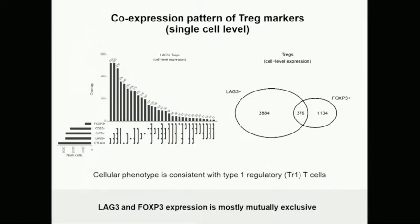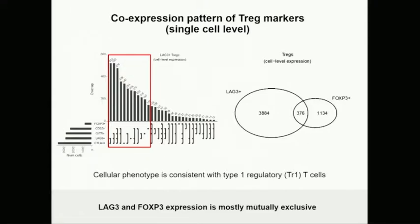Standard readout of regulatory cells in model systems and clinical studies uses exclusively FOXP3, but you can see the size of the T-cell population with suppressive function that is missed by single-staining FOXP3, with only minimal overlap. This is a very important message for histology interrogation of tumor microenvironments — those markers with LAG3 and FOXP3 show only a minor proportion is FOXP3 alone.